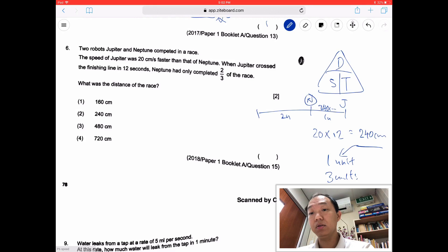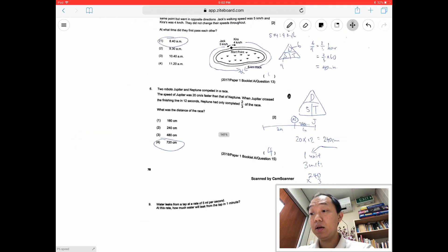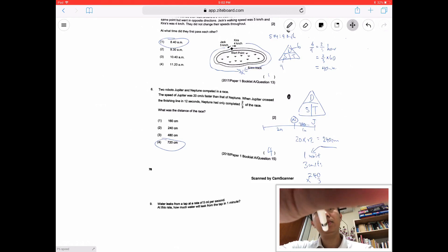So Neptune had only completed 2/3 of the race. So Neptune is here, and this is 2 units, and this is 1 unit. So what was the distance? It's pretty simple. 240 cm represents 1 unit, and hence, I want to find 3 units. I take 240 times 3. So 240 times 3 is going to be 720 cm. So the answer is 4 for this particular question. So far, these are the two multiple choice questions.